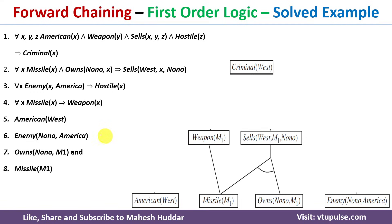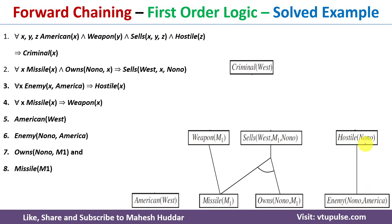Coming to another rule: whenever X is an enemy of America, X is hostile. We know that Nono is an enemy of America, which means Nono is a hostile nation.